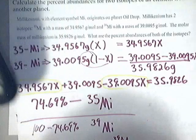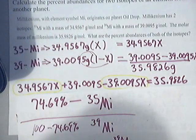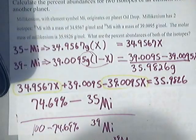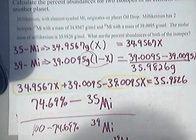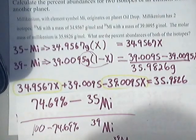So basically, looking at that as percentages, that's 25.31 percent for the 39 MI.